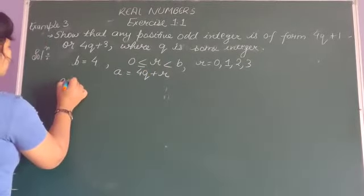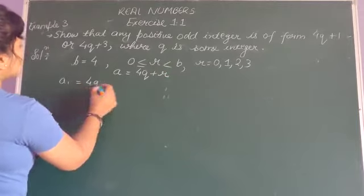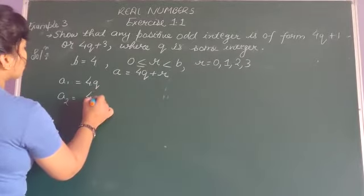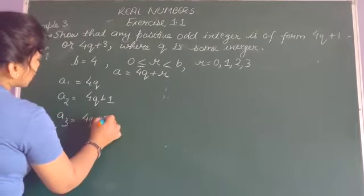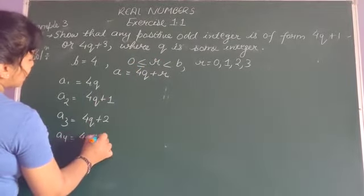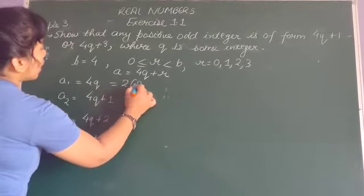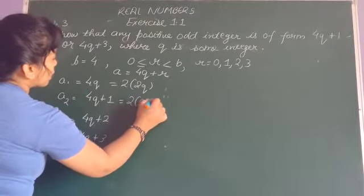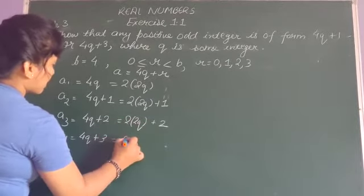A can have 4 values — when we take R as 0, A1 क्या हो जाएगा? 4Q. Similarly, 4Q की जगह पर यहाँ पर भी मैं इस value को substitute कर देती हूँ। ऐसे ही मैंने A3 में भी किया और ऐसे ही मैंने A4 में किया।